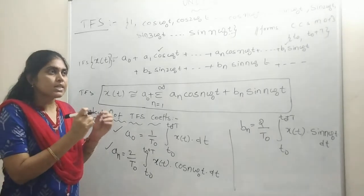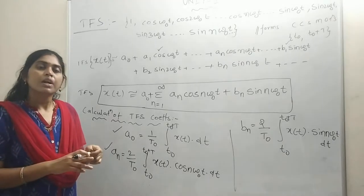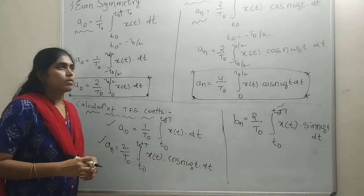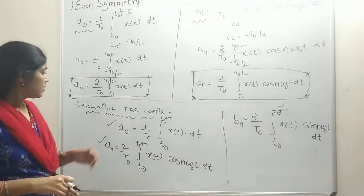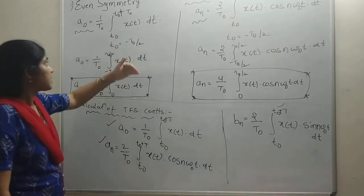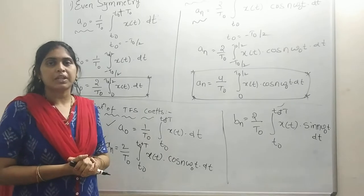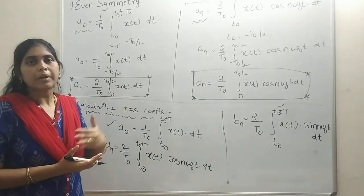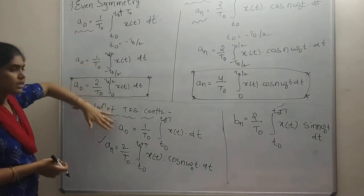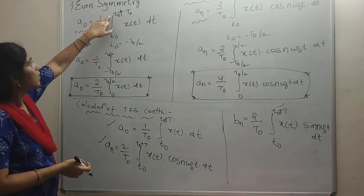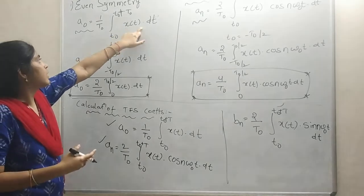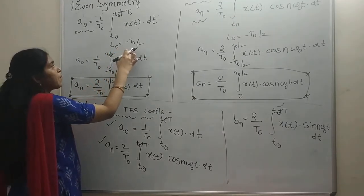There are sub-cases. If the signal has even symmetry, further simplifications exist for the TFS coefficients. These are the formulas for evaluation of TFS coefficients — the a₀ formula, aₙ formula, and bₙ formula. Now the special case: if signal x(t) has even symmetry, I will explain how these formulas are modified.